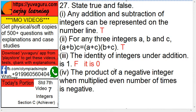The product of a negative integer when multiplied even number of times is negative. That is false.